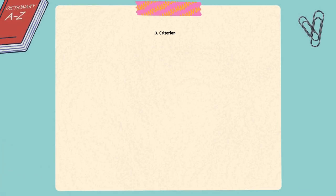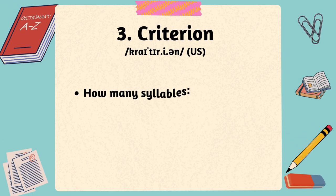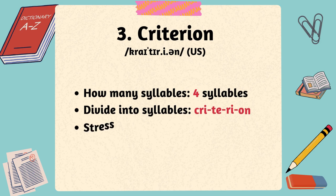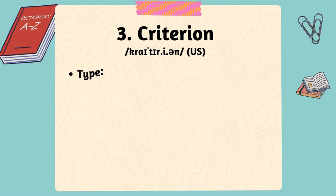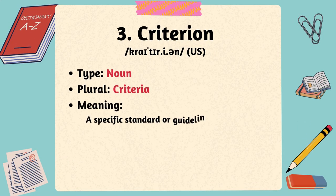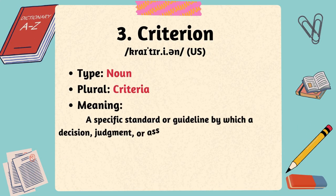The third word is criterion. The word criterion has four syllables, with the stress on the second syllable. Criterion is a noun in English and it refers to a specific standard or guideline by which a decision, judgment, or assessment can be made.